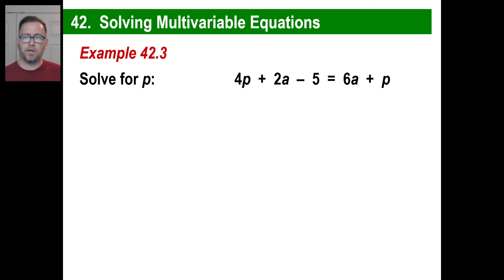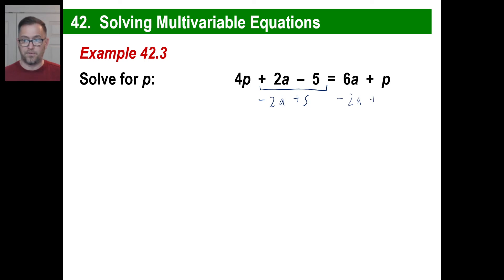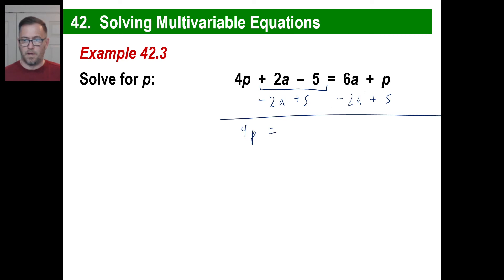And let's solve for p. Well, first off, we want p — that's already on the left. I'm going to get rid of the 2a and the negative 5. So I will subtract 2a and add 5, which means I will subtract 2a and add 5 on the other side. Now I just have 4p on the left. On the right, I have 6a minus 2a — that's 4a — plus p, plus 5.